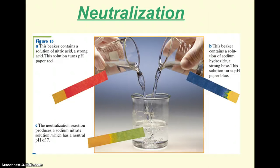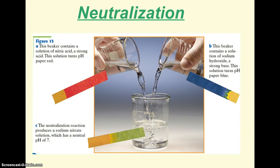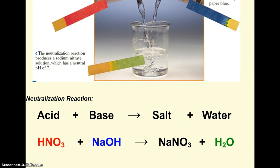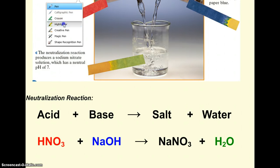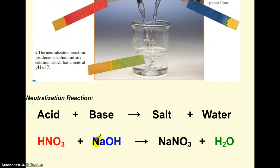Our next topic is neutralization — when an acid and a base get together, they neutralize each other. For example, strong acid nitric acid turns pH paper red, and strong base sodium hydroxide turns pH paper blue; both have pretty dangerous consequences to humans. But when we mix them together in the proper amounts, we get a neutral solution. The hydronium and hydroxide ions can't coexist — they bump into each other and make water, and what's left over is a salt. The sodium from sodium hydroxide and the nitrate from nitric acid make the salt sodium nitrate, plus water.